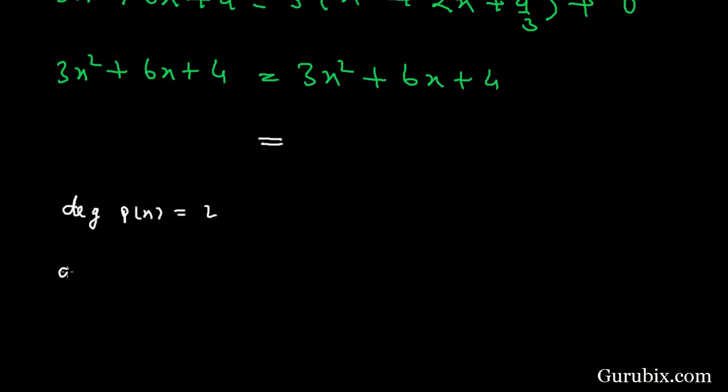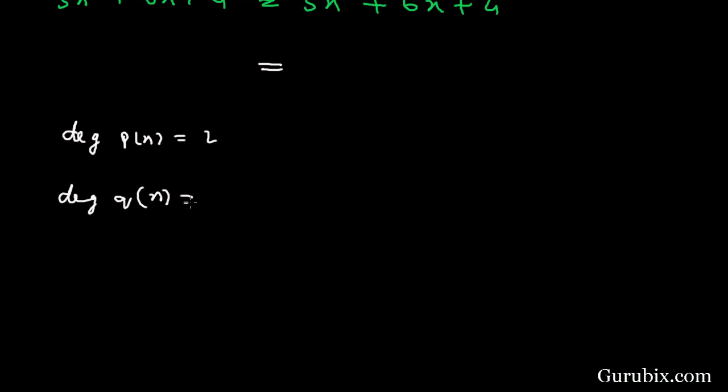The degree of polynomial p(x) is 2, and the degree of polynomial q(x) is also 2. Therefore, degree of p(x) equals degree of q(x).